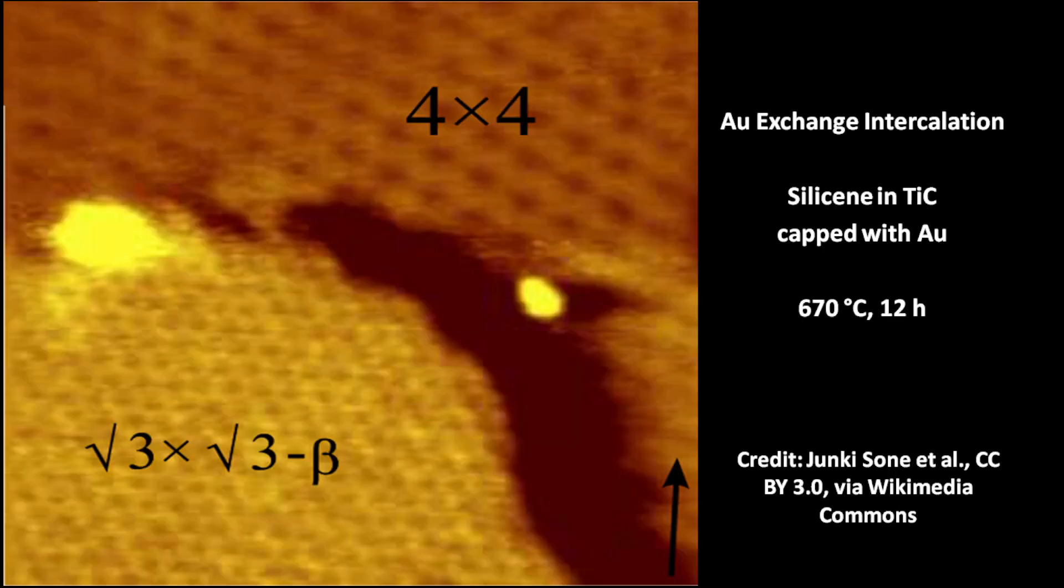A new approach, the gold exchange intercalation, brought a breakthrough in the goldene synthesis. Titanium carbide containing silicene, the two-dimensional allotrope of silicon, was kept with gold at 670 degrees Celsius. The gold atoms replaced the silicon atoms in the structure within 12 hours.